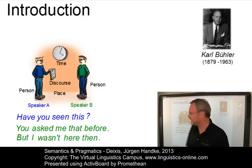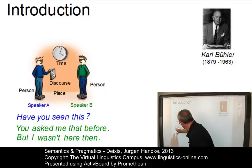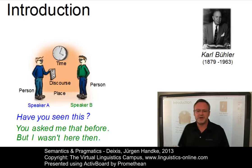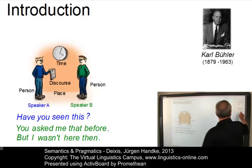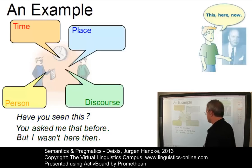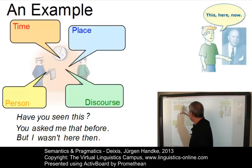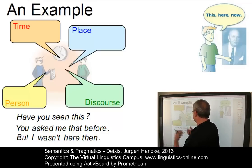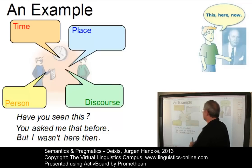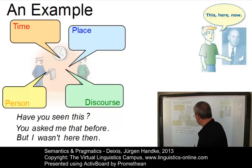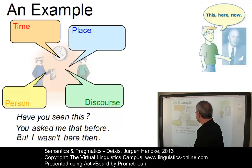Let us find out how these examples of this little dialogue are realised in an actual example. Here we have our four deictic labels: time, place, person, and discourse. Let us now associate the elements of this short dialogue to these labels.